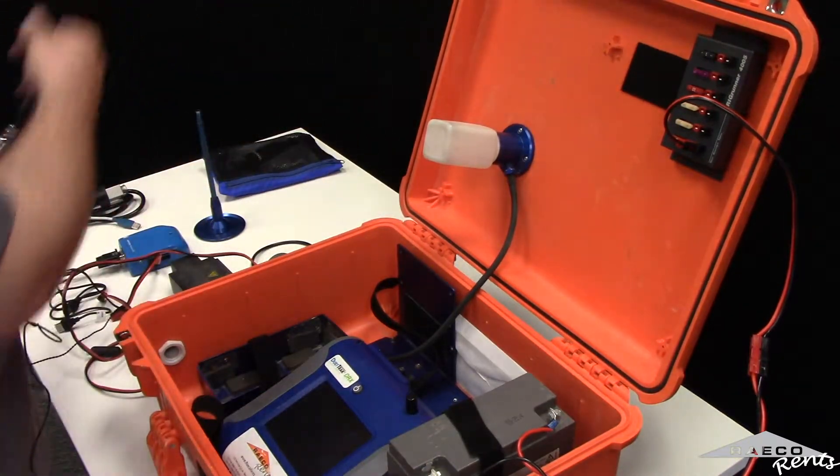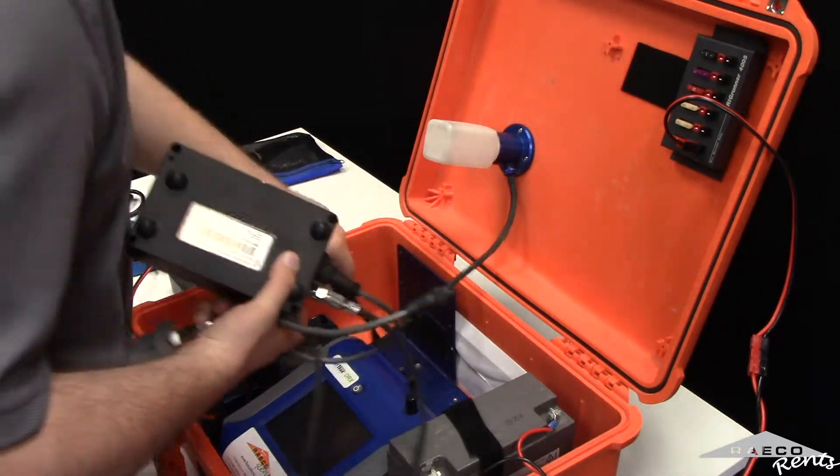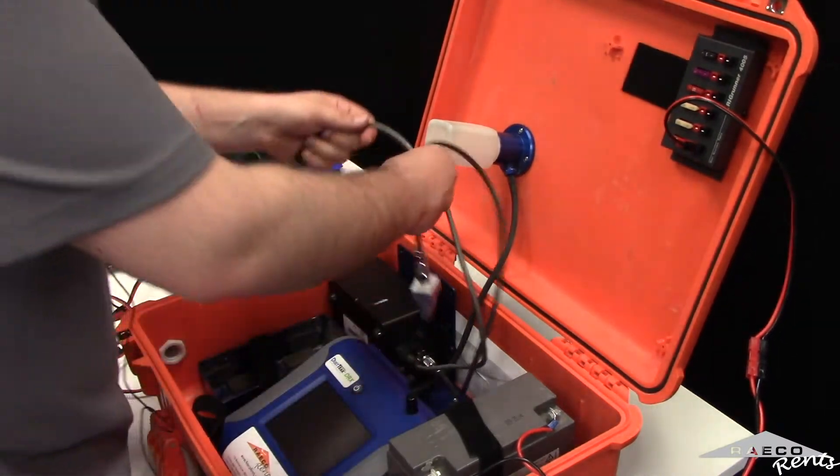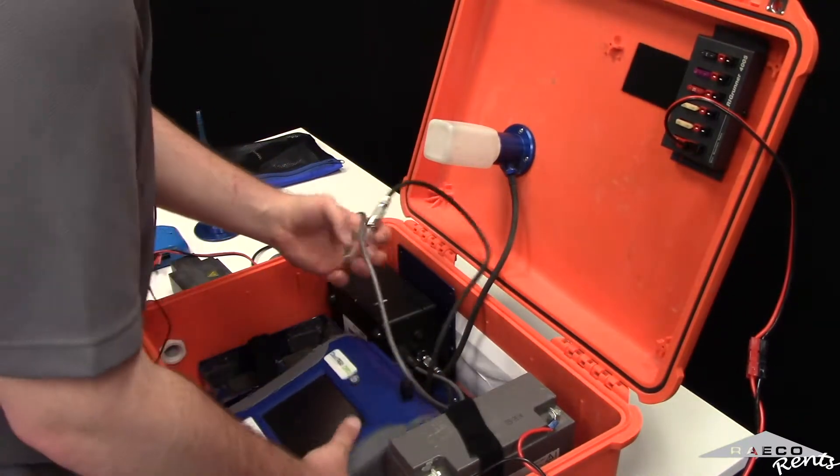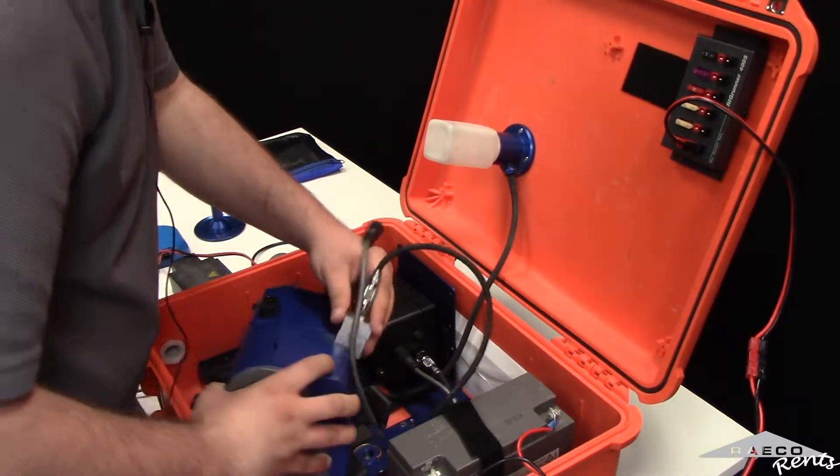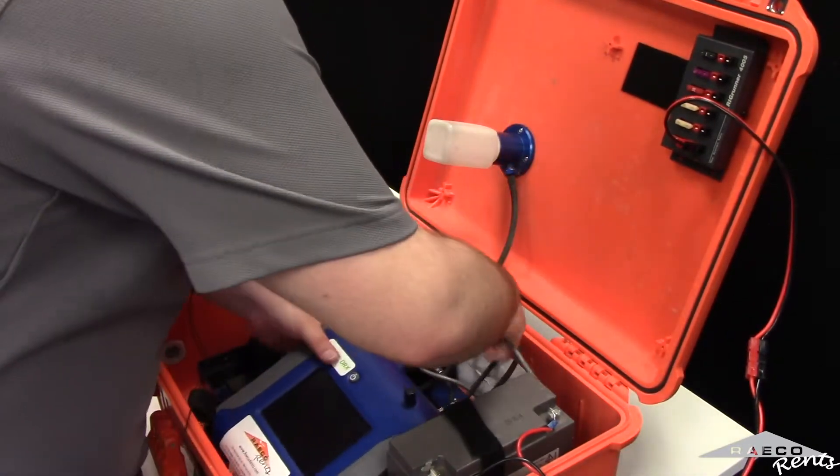Next, depending on whether or not you have an external pump, you'll want to plug in the external pump. The external pump is situated here and should stay here at all times. This silver piece here is plugged into the bottom of the dust track here and then plugged in here.